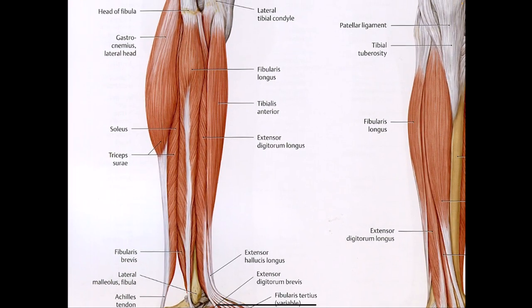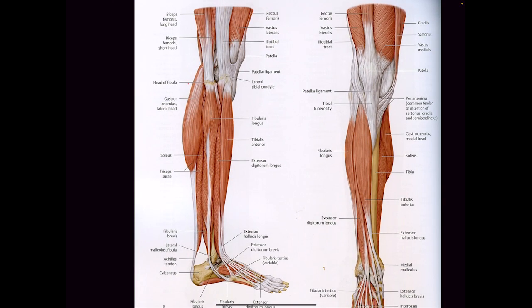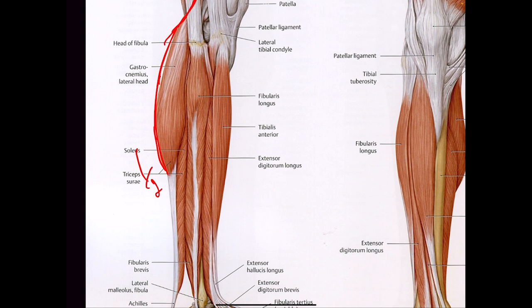Right behind the calf is this little sliver of muscle that pops out — that is the soleus, S-O-L-E-U-S. And the calf connects to a tendon — the Achilles tendon.